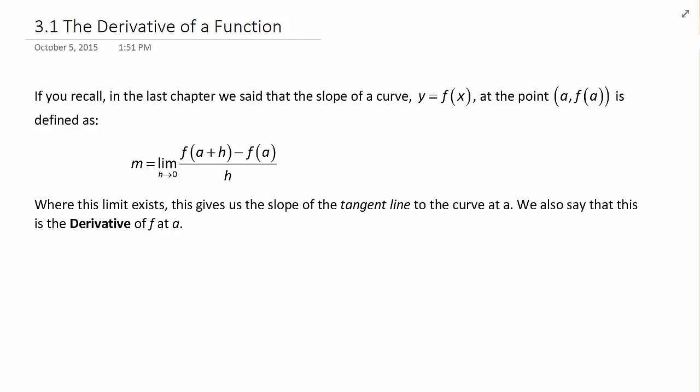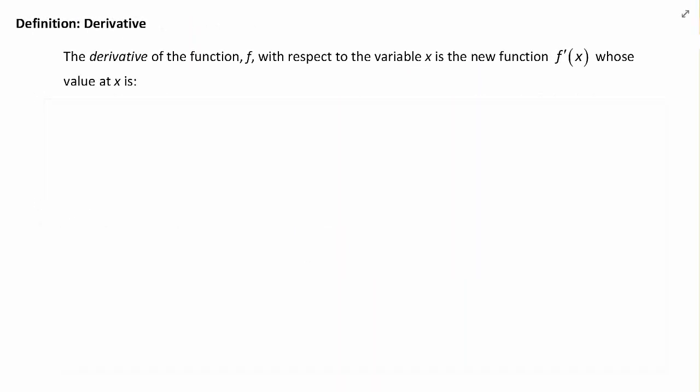But let's go even further with this. Rather than forcing ourselves to calculate the limit for each individual point on a function, let's derive a formula, a new function, so that no matter what the value of x is, we have a way to calculate the derivative. Definition: The derivative of the function f with respect to the variable x is the new function f prime of x, whose value at x is given as f prime of x equals the limit as h approaches 0 of f of x plus h minus f of x all over h, assuming of course that the limit exists.